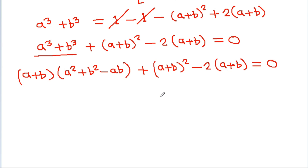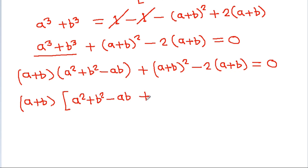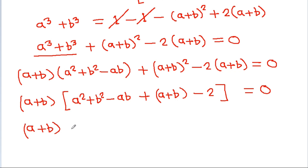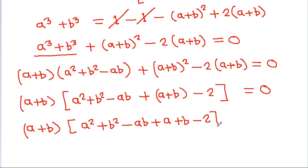After expanding and simplifying, we get: (a plus b) squared minus 2 times (a plus b) is equal to 0. Now we can take (a plus b) common, and it will be (a plus b) times (a² plus b² minus ab plus a plus b minus 2) is equal to 0.